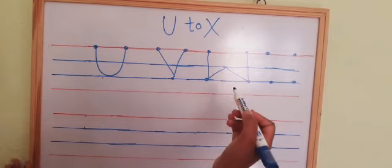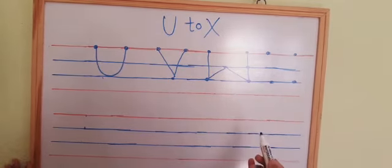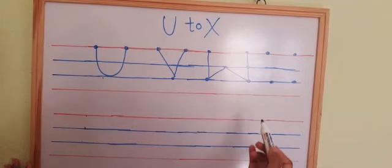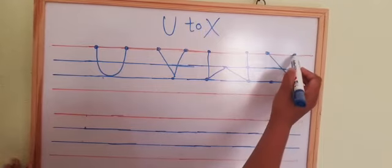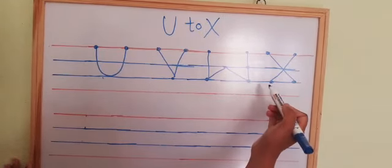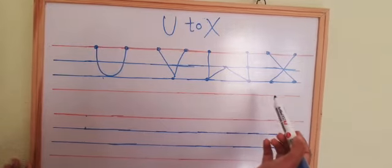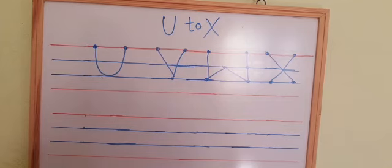W says Watch. W says Watch. Then, we will make letter X. One slanting line. And then, one more slanting line. This is letter X. Like this, you have to write in your notebook in clean and neat handwriting.